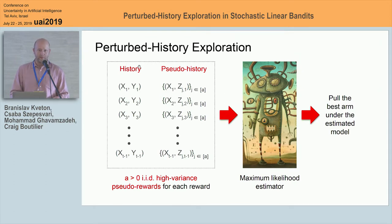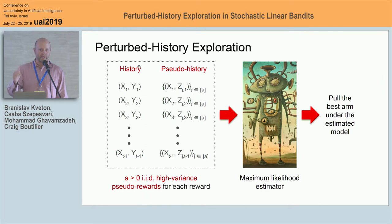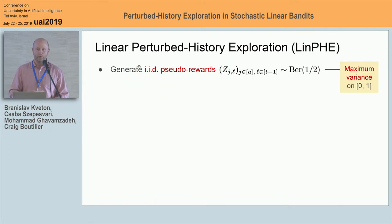To do exploration, we simply perturb the training data going into the maximum likelihood estimator. One particular way we propose is that for every observation — a pair of feature vector and reward — we add to the training data A copies, where A is a tunable parameter, of this feature vector with a randomized reward. It's very important that these randomized rewards have high variance and are generated freshly in each round. Then you pass it through the maximum likelihood estimator and pull the arm with the highest reward under this perturbed model.